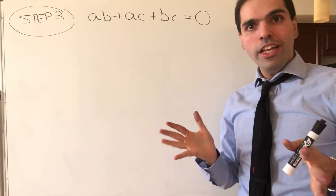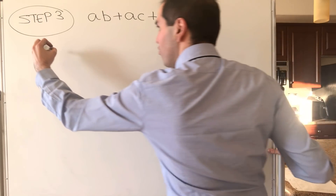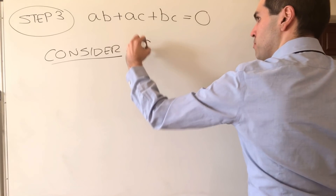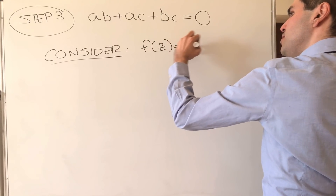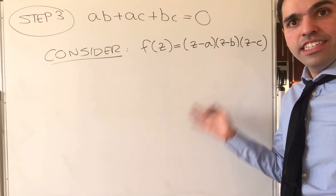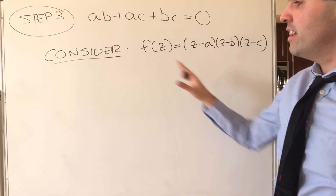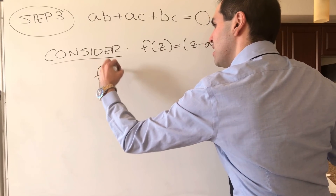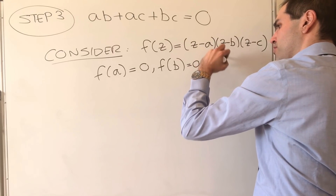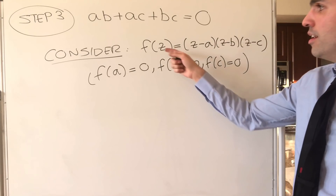Now the next step is truly unbelievable — kind of like mathemagic. Let's consider the following complex function: F of Z, which is simply (Z minus A)(Z minus B)(Z minus C). And remember — this will be very important for the end — we know that F of A is zero, F of B is zero, and F of C is zero. We won't need that right now, but very soon.